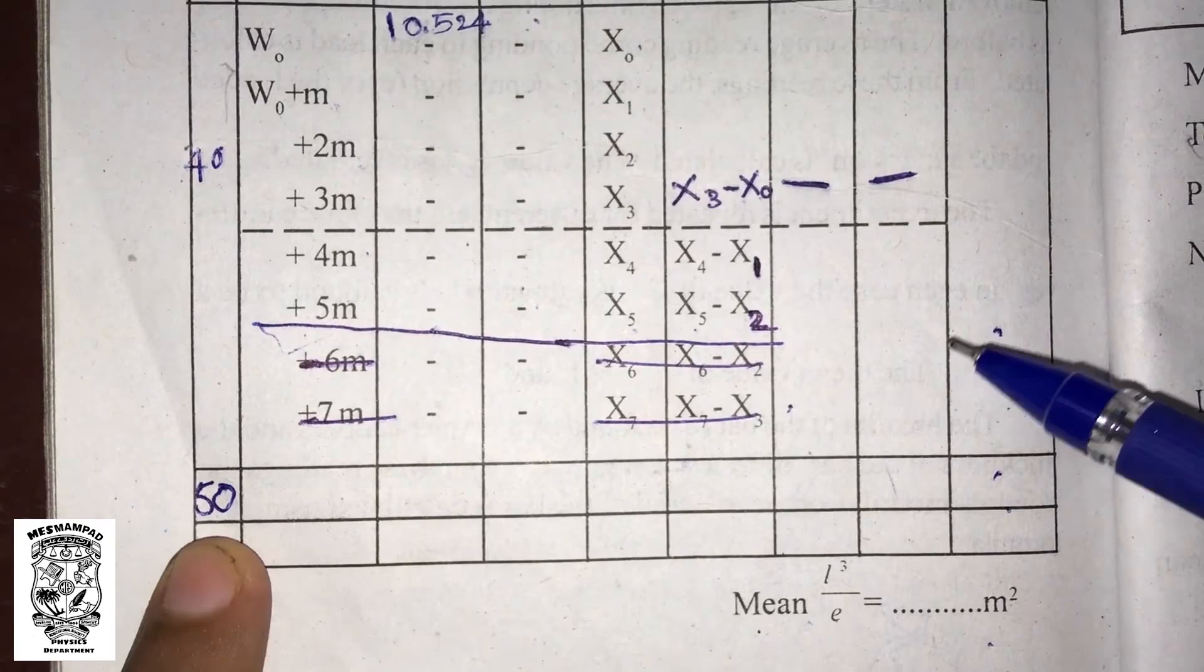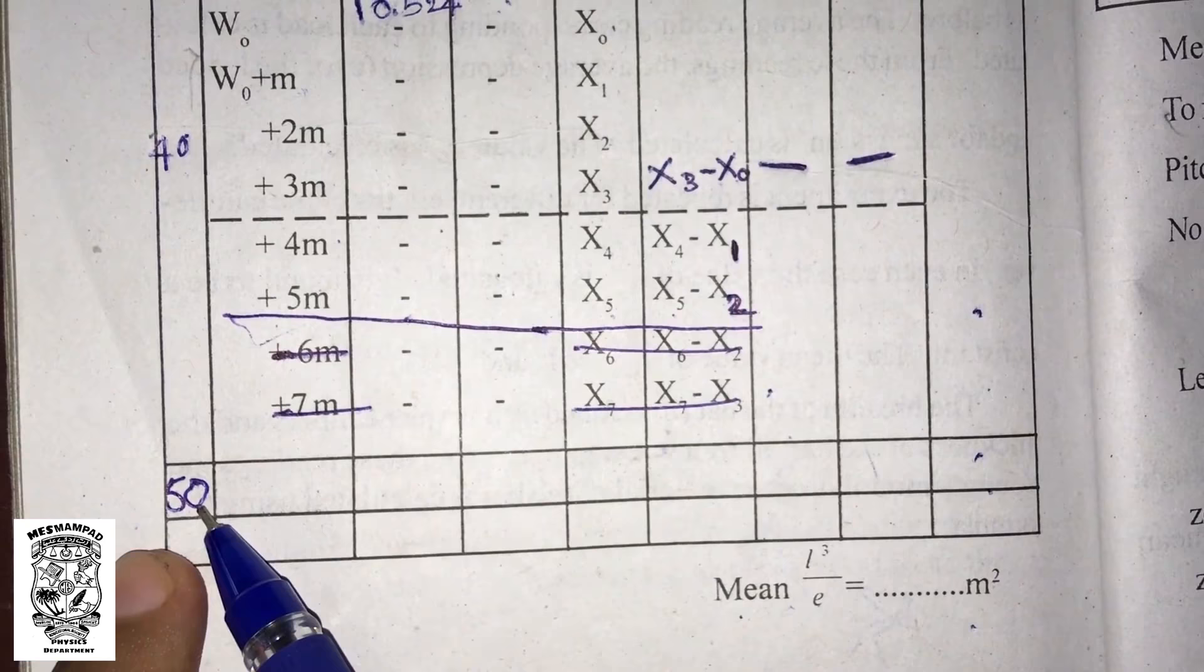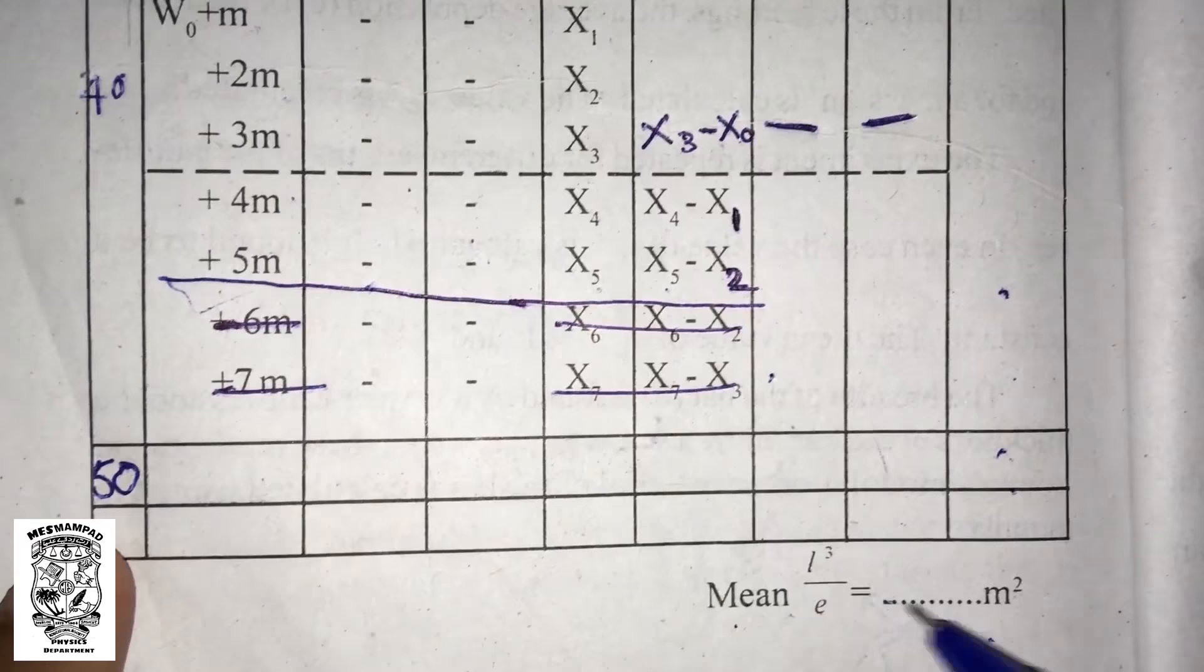The experiment is repeated at different lengths of the cantilever. Next, for 50 centimeter length, we have found L cubed over E and mean L cubed over E is found.